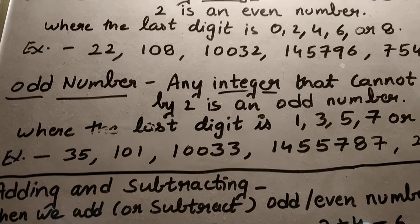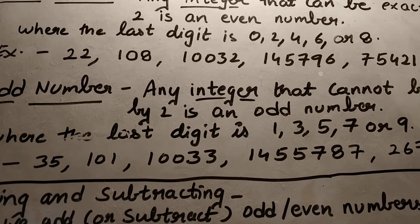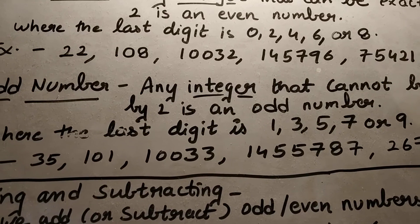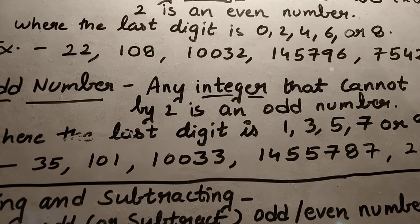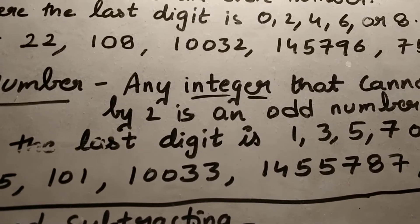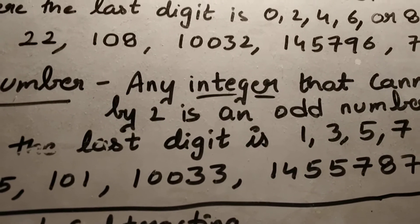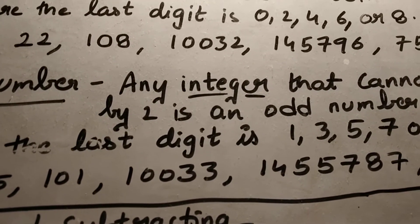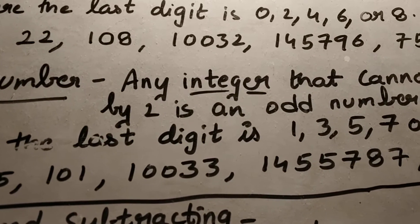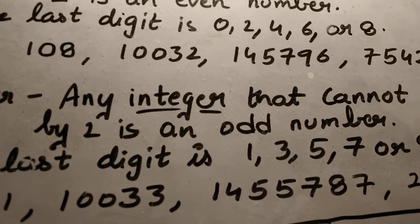Now look at some examples. Always look at the last digit. For the number 22, the last digit is two, so it is an even number. For 1088, eight is the last digit in the ones place, and eight is an even number because it is exactly divisible by two.